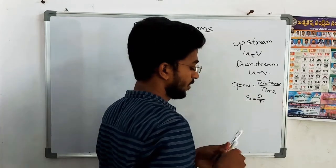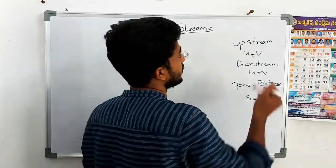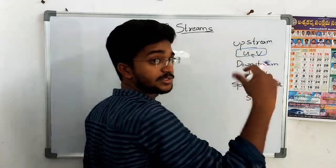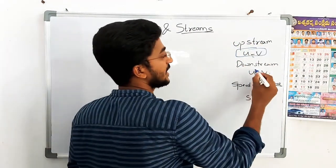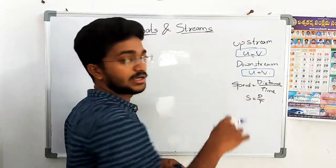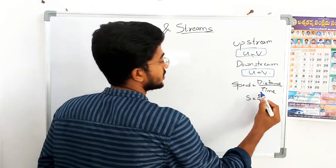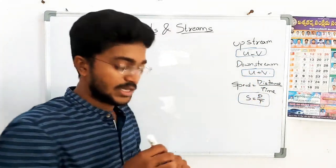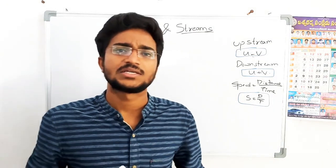Now let's go to the formulas. First: upstream speed is opposite to the flow of stream, so relative speed is U minus V. Downstream speed is along the stream, so relative speed is U plus V. And the basic speed formula is: speed equals distance divided by time. These three points are the core of boats and streams.